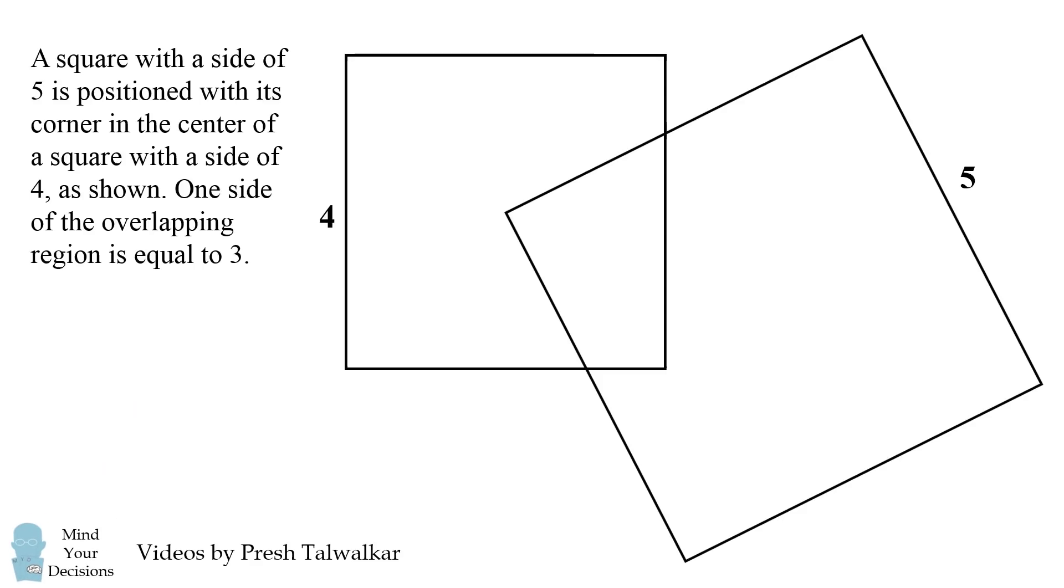A square with a side length of 5 is positioned with its corner in the center of a square with a side length of 4 as shown in the diagram. One side of the overlapping region between the two squares is equal to 3.